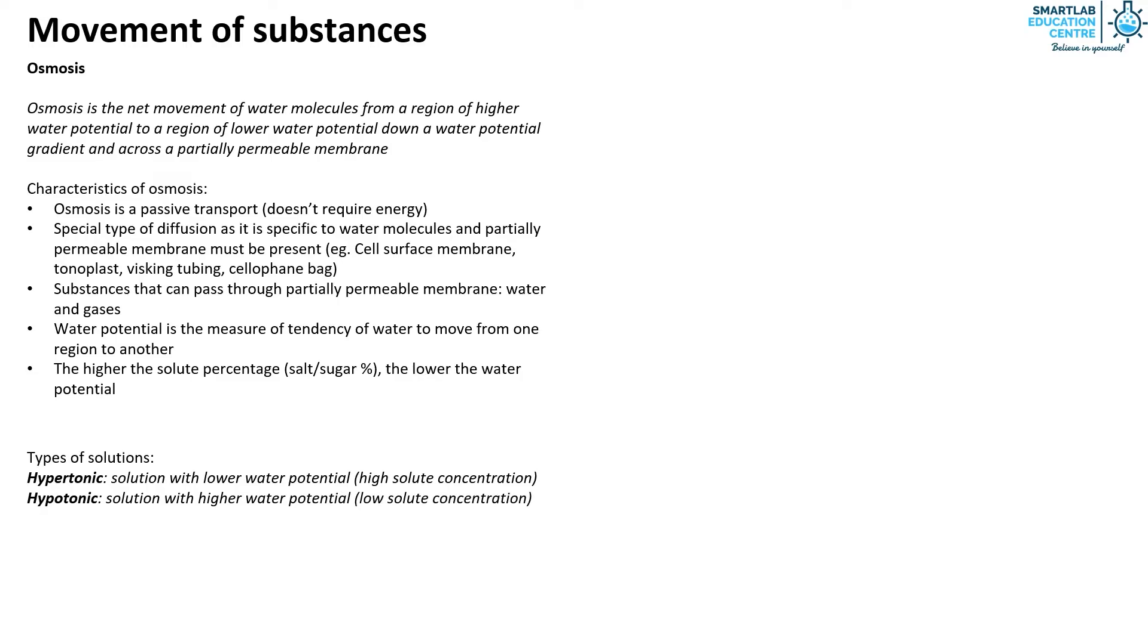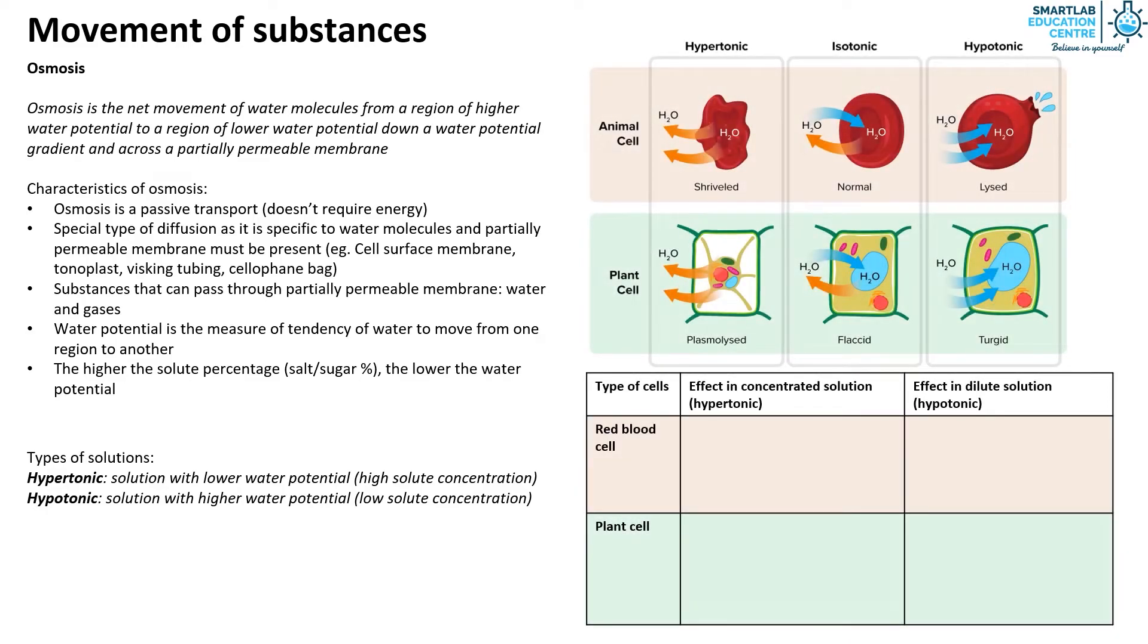We will now take a look at the effects of osmosis on red blood cells and plant cells. If red blood cells are placed in a hypertonic solution, crenation occurs. Water leaves the cell via osmosis and membrane of RBC starts forming little spikes. The cell shrinks and becomes dehydrated, leading to cell death.